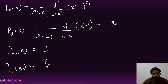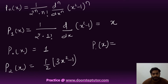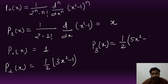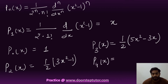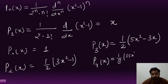If I put n = 2, the term becomes (1/2)(3x² − 1). If I put n = 3, it becomes (1/2)(5x³ − 3x). And for n = 4, P_4(x) = (1/8)(35x⁴ − 30x² + 3).